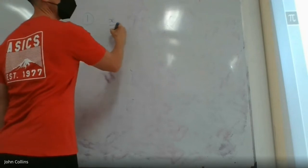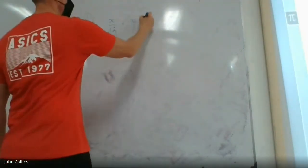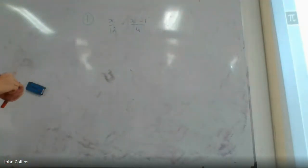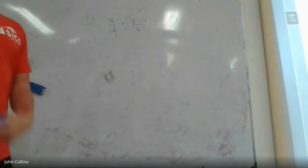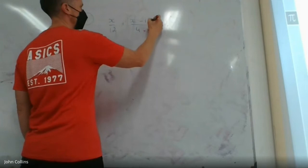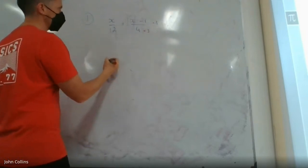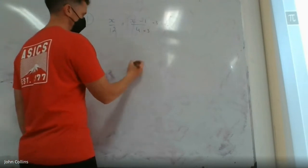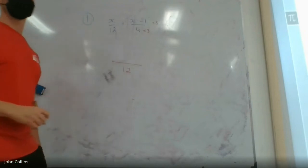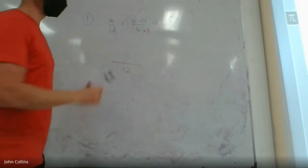x over 12 plus x minus 1 all over 4. I see a common denominator here between 12 and 4 of 12, so 12 fits into 12 once, multiply this by 3. I'm going to put it all over 12, because it's essentially going to be all over 12 anyway, instead of having separate fractions.